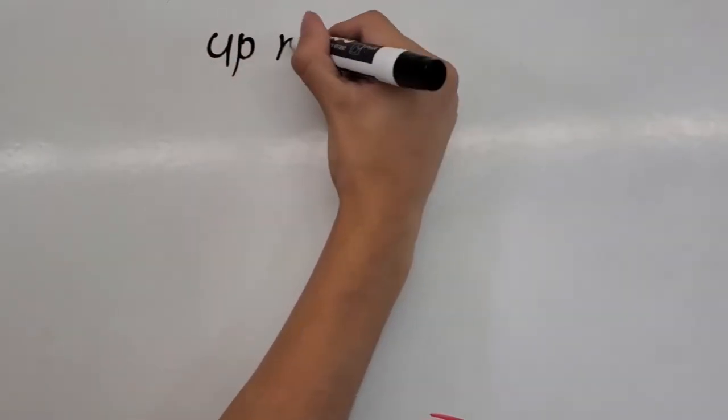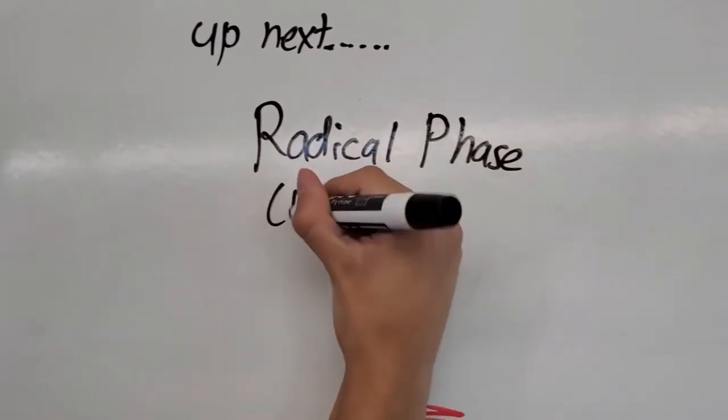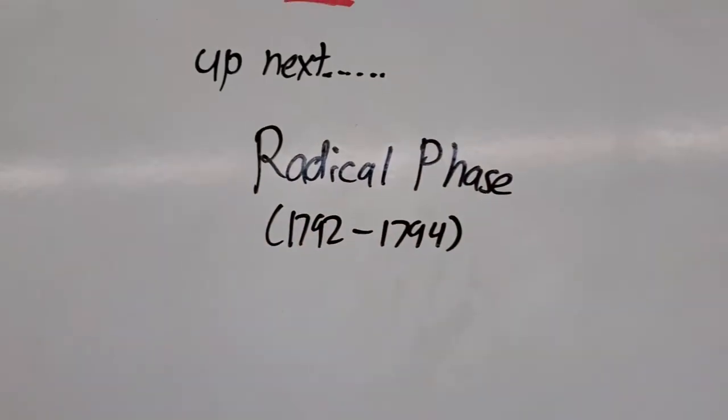All of these events helped transition to the second phase, the radical phase, in 1792-1794.